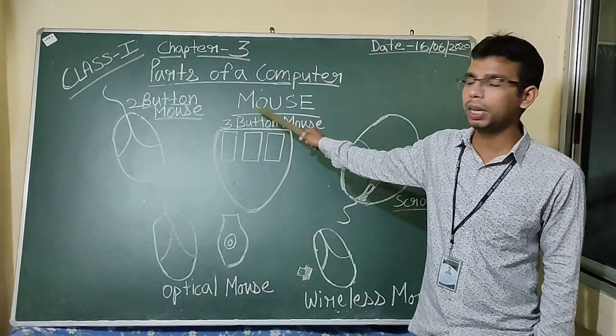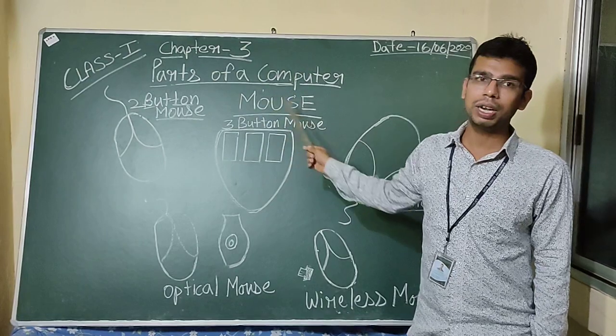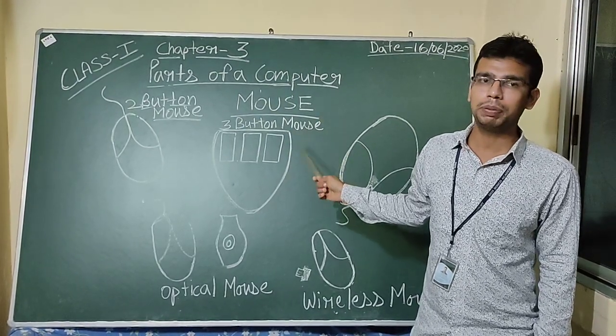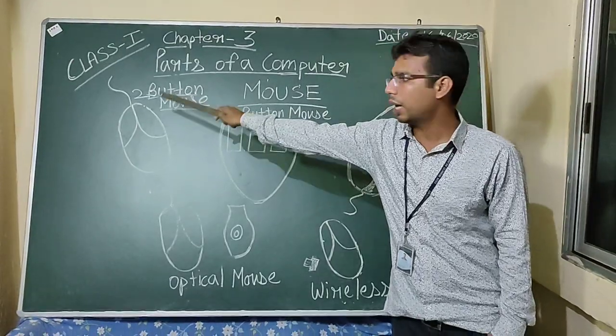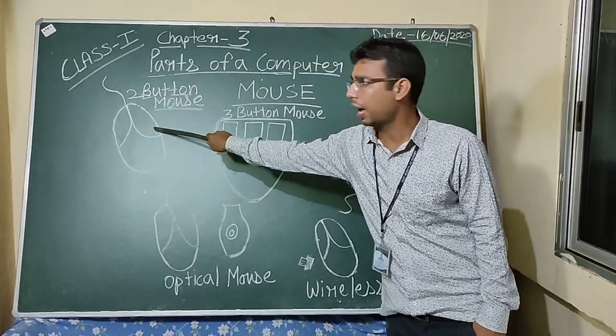Now let me speak about mouse. There are different types of mouse. Let me speak one by one. 2 button mouse has 2 buttons, one left and one right.